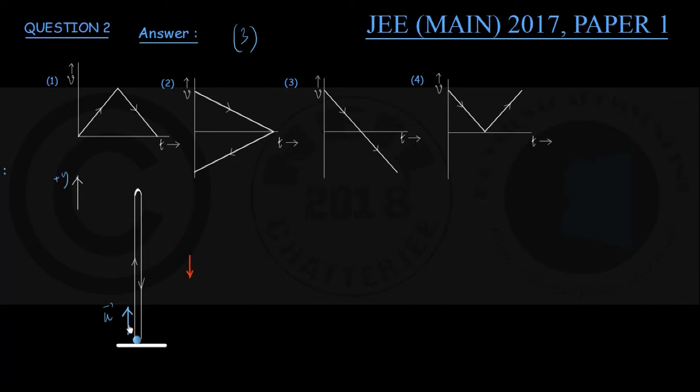While velocity is positive and continually decreasing during upward flight, and negative and continually increasing in magnitude during downward flight, the acceleration of the particle during the whole flight, be it the upward part or the downward part, throughout this motion, acceleration remains constant at g vertically downwards.